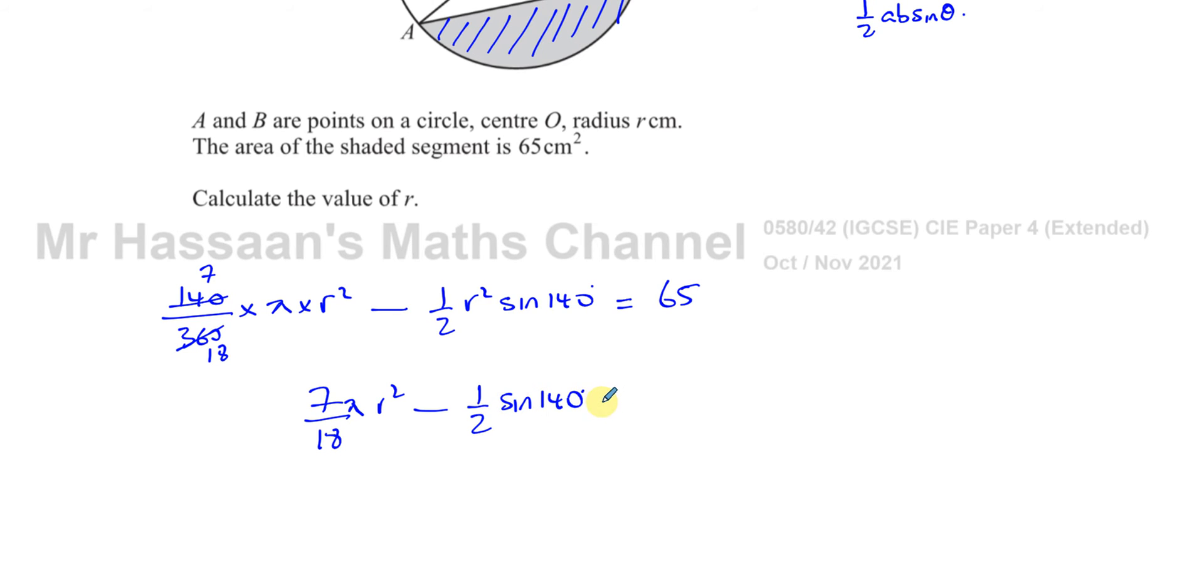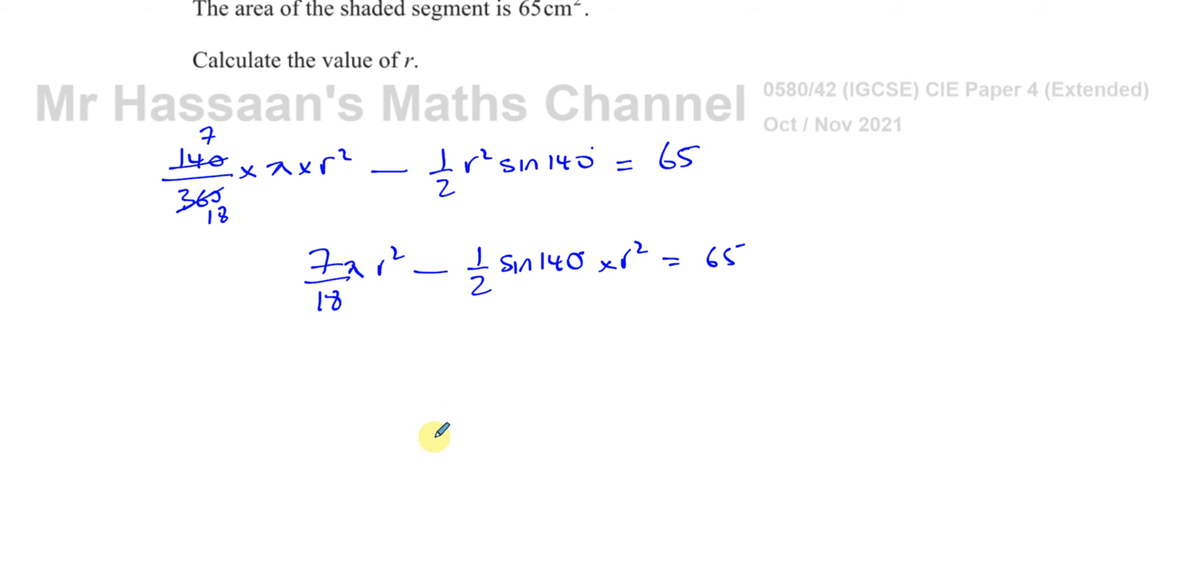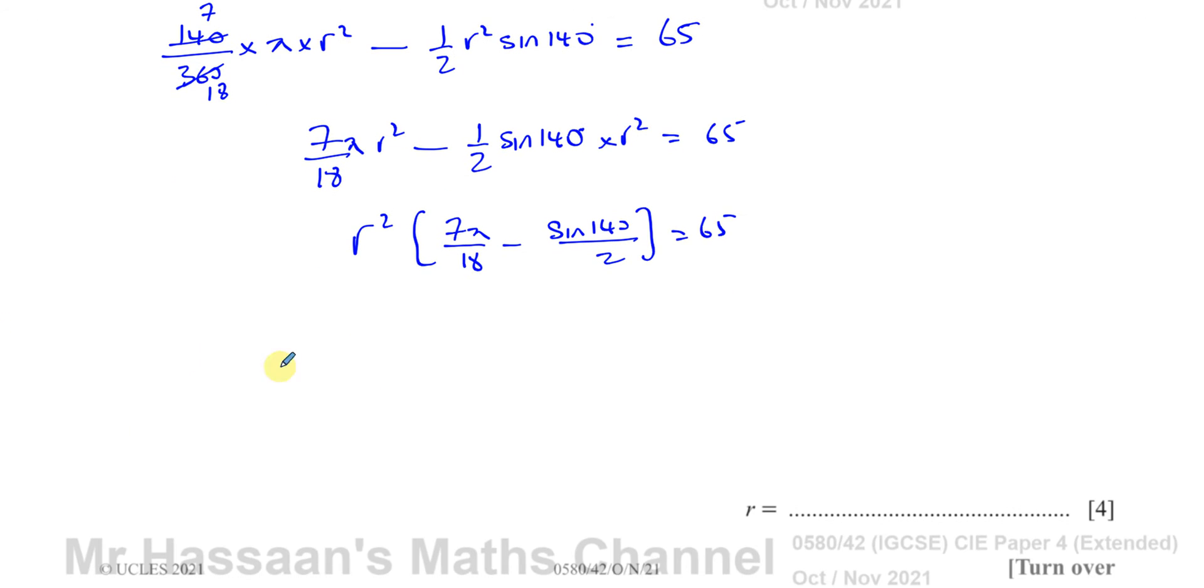I'm not going to write it in its rounded form because that will give me an irrational number which will just continue. I'll leave things as exact as possible. So this is a half times sine 140 times r squared equals 65. If I take out r squared as common, I'm left with r squared times 7 pi over 18 minus sine of 140 over 2 equals 65.